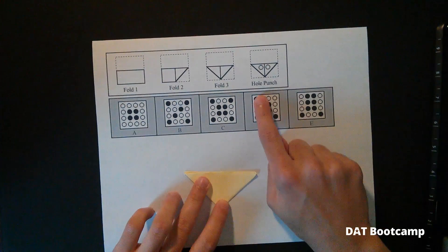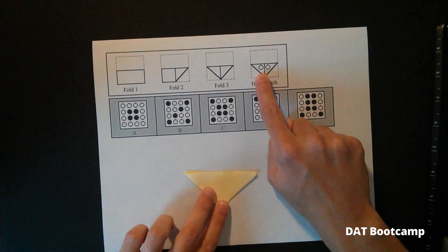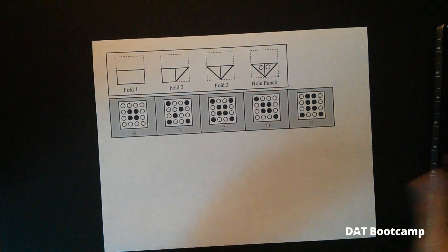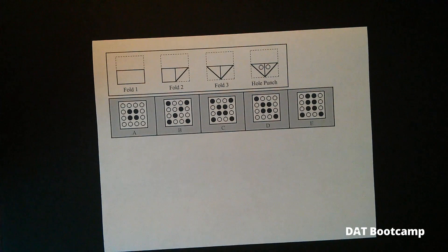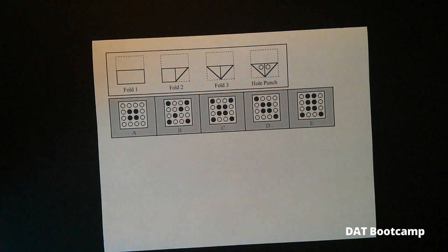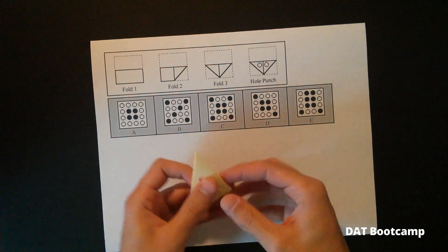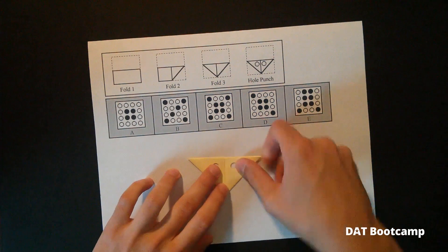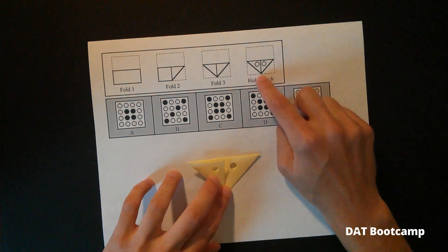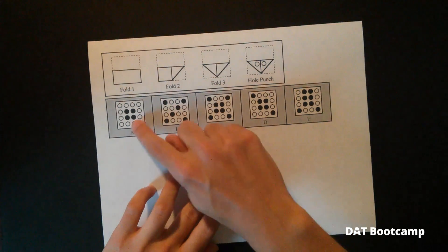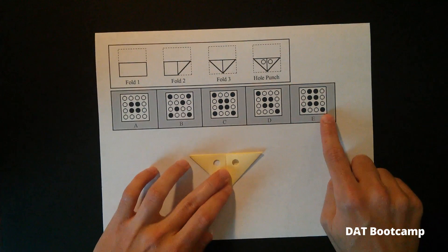And then finally, in the last step, two hole punches were placed. Here and here. And this is what we're left with here. Now your job is to mentally unfold this piece of paper and see which of these answer choices lines up with the correct answer.